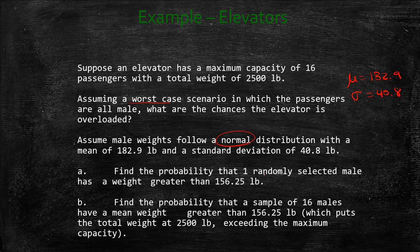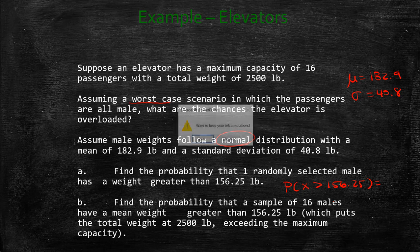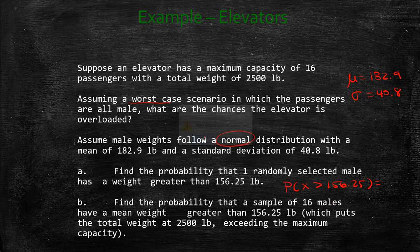We want to first find the probability that one randomly selected male has a weight greater than 156.25 pounds. So the probability that x, one man, is greater than 156.25. So this is just a kind of reminder of what we've been doing up to this point to find probability.